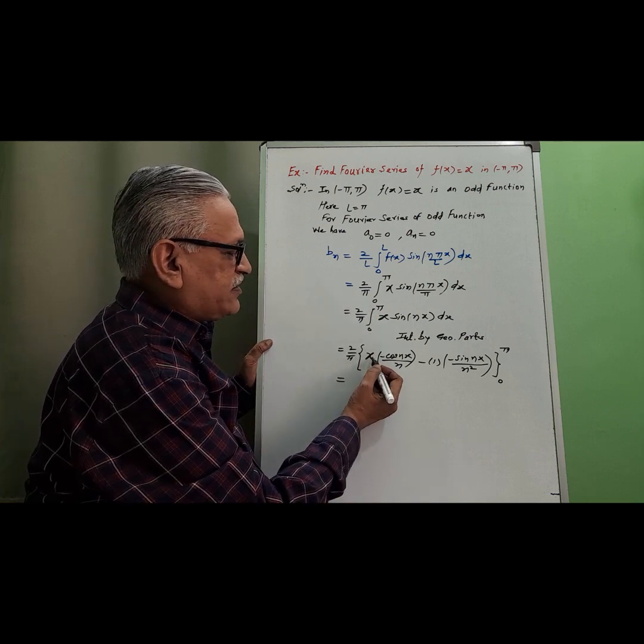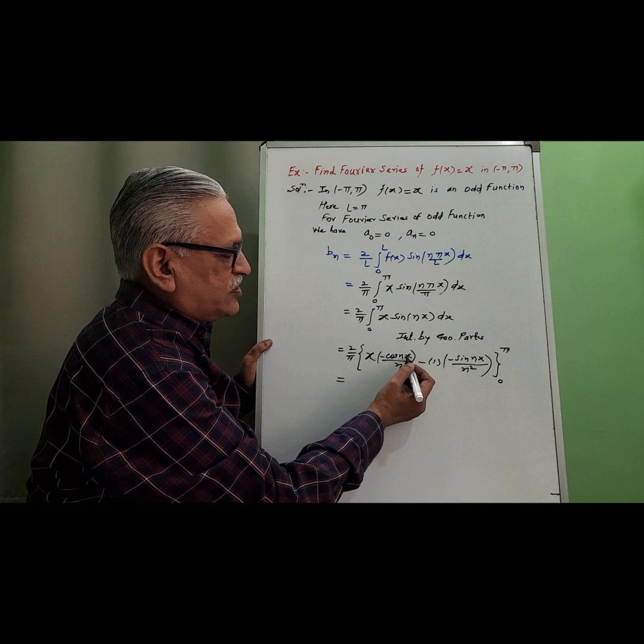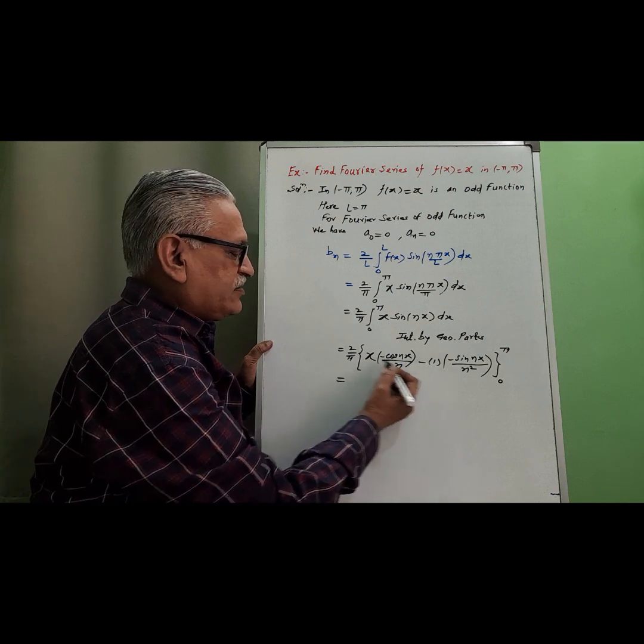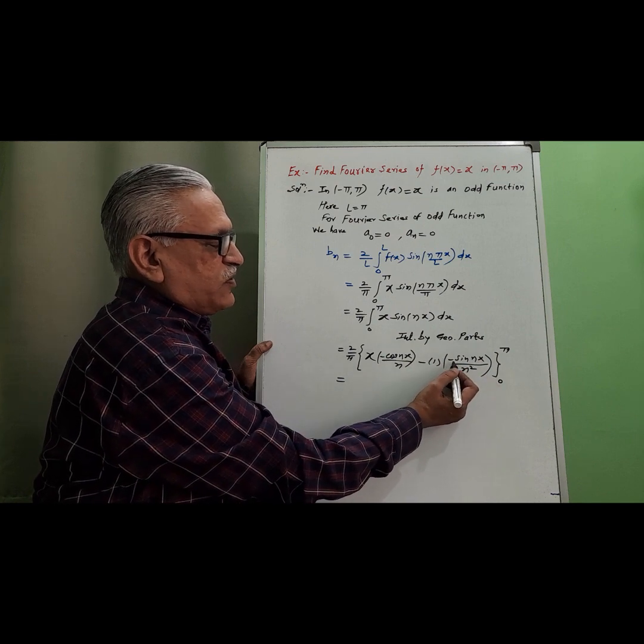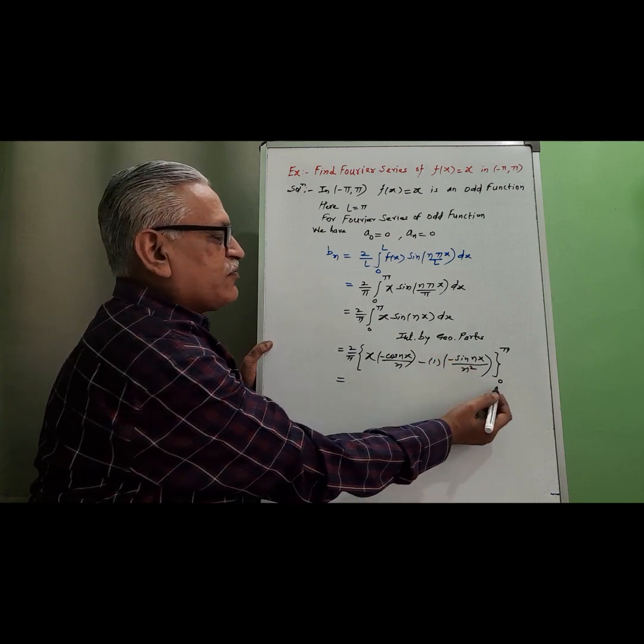Using integration by parts: first function is x, integration of sin is -cos(nx)/n, then minus, derivative of x is 1, integration of cos is sin(nx)/n², and applying limits from 0 to π.